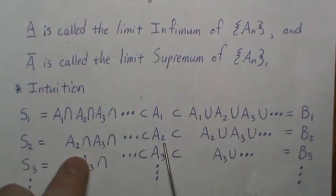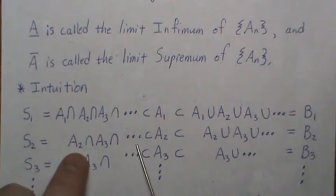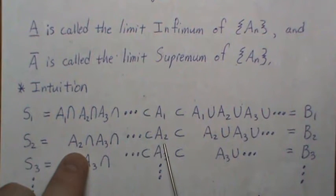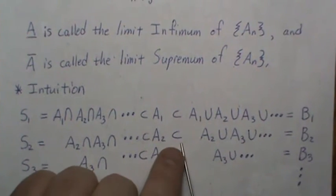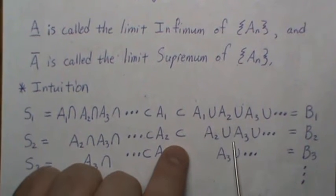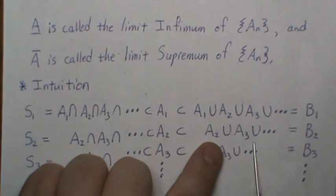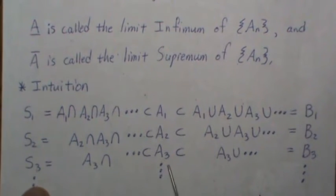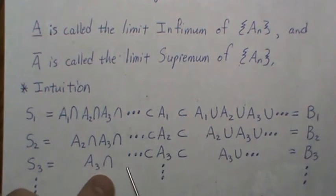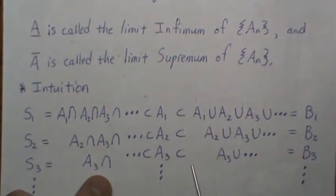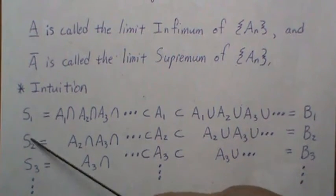For A_2 we do something similar except we drop A_1. We take the intersection of A_2, A_3, A_4 all the way to infinity, and this is a subset of A_2, so we call it S_2. Going right, A_2 is a subset of the union of A_2, A_3, A_4, etc., because union can only get bigger, so we call that B_2. S_3 and B_3 are defined similarly: S_3 is the intersection of A_3, A_4, ... and B_3 is the union of A_3, A_4, etc.